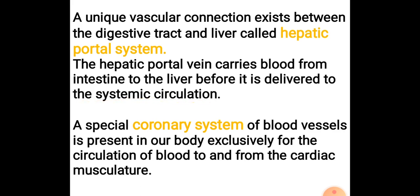When oxygenated blood moves into the intestine, the oxygen is taken up by the intestinal cells. The digested nutrients are released into the blood. That blood, carrying the digested nutrients, is then taken through the hepatic portal vein to the liver.